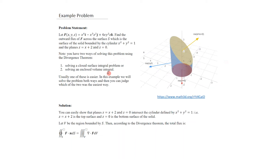There are two ways to apply the Divergence Theorem: solve the closed surface integral (with three discrete surfaces: the base, the outer cylindrical surface, and the slanted top plane), or solve the enclosed volume integral using the divergence of the vector field. One of these is usually much easier, and the idea is always to pick the easy one.